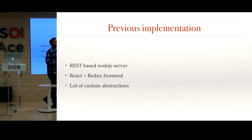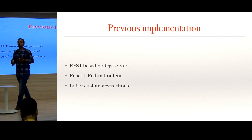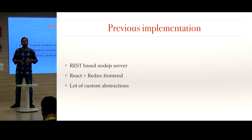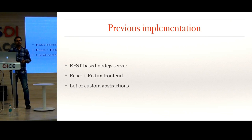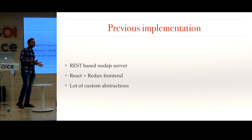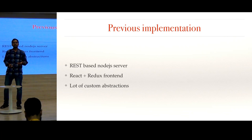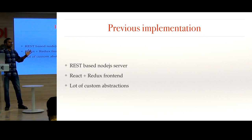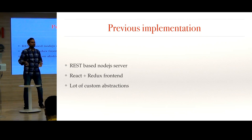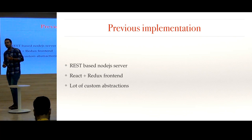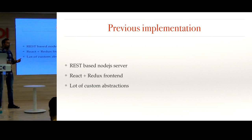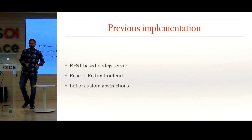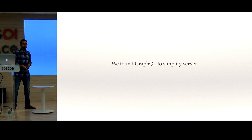But because we have a lot of complex features, we started writing a lot of custom abstractions to manage all those complex features. We were able to get the app working, but the downside of writing a lot of abstractions is it's very hard for a new developer to onboard. A new developer comes, sees such code, and says, 'I've never seen this before.' So we were in search of simplifying our stack, and in that research, we found GraphQL.